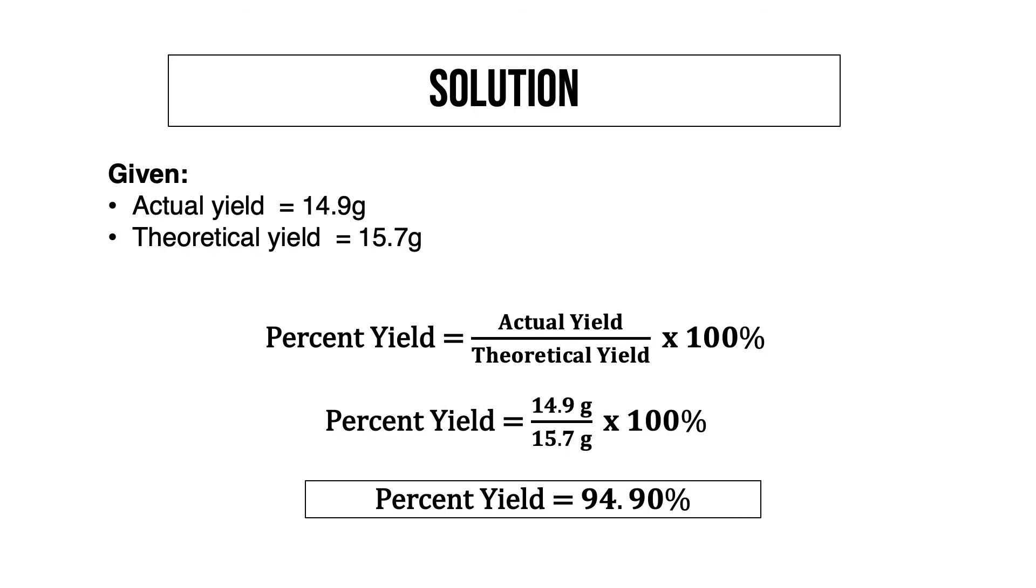As shown in the calculated value, the percent yield of the reaction is not 100%. This is normal as several factors might have caused the insignificant decrease in the yield.